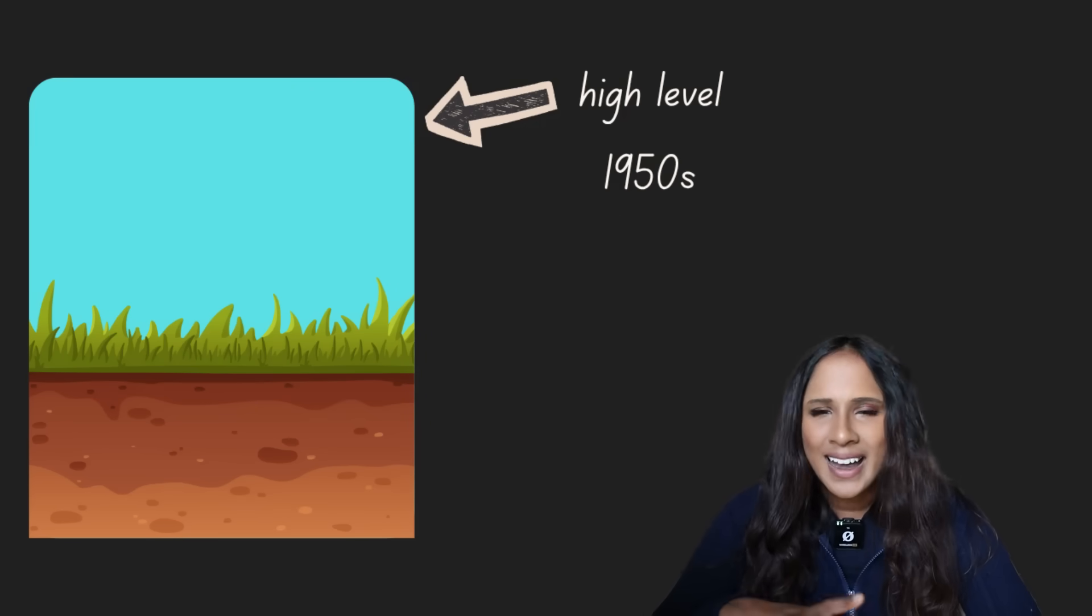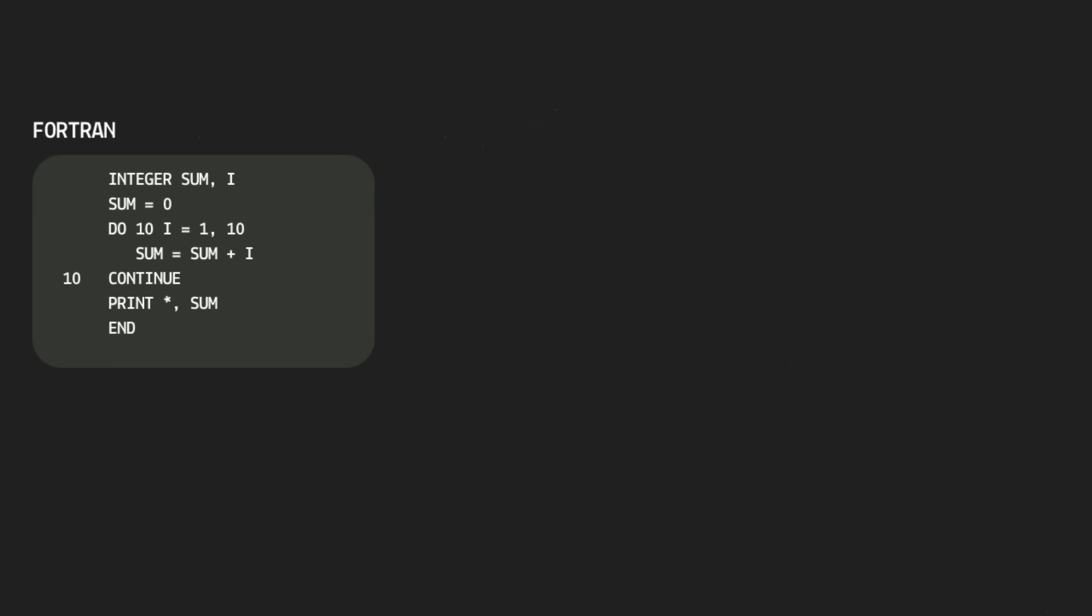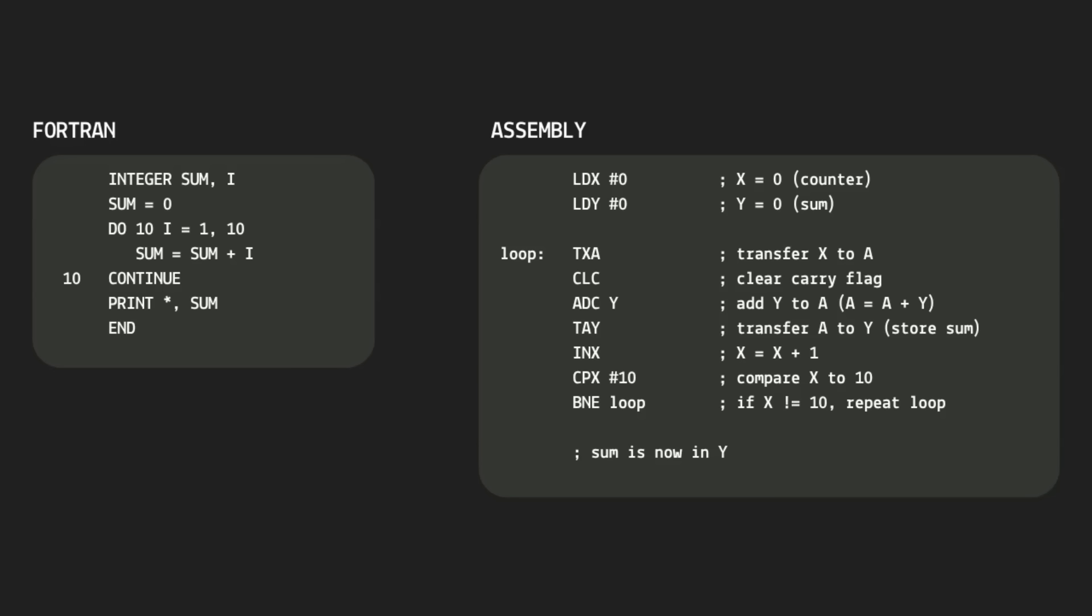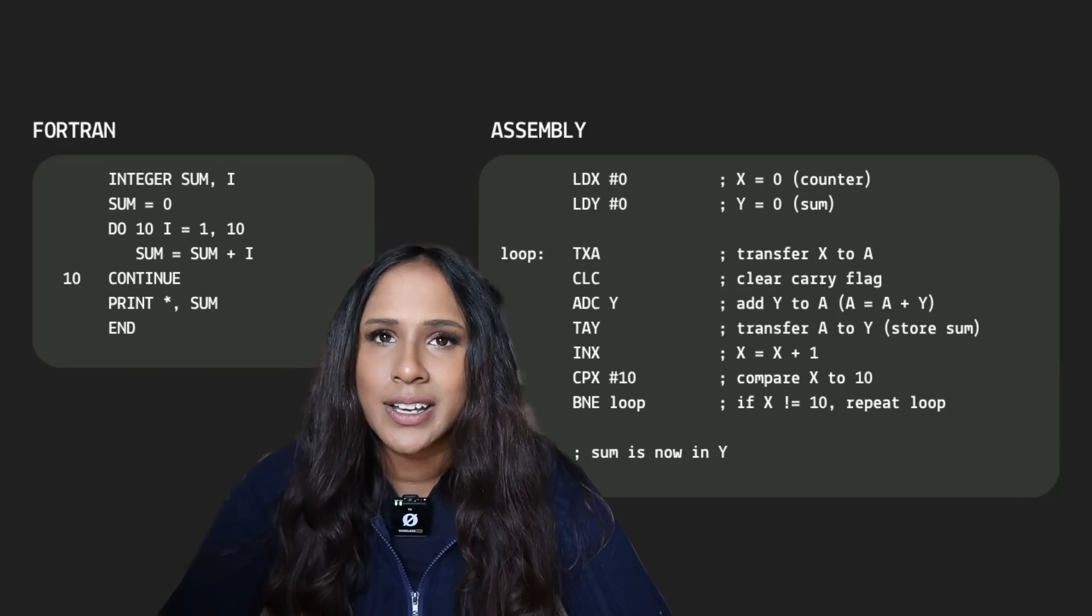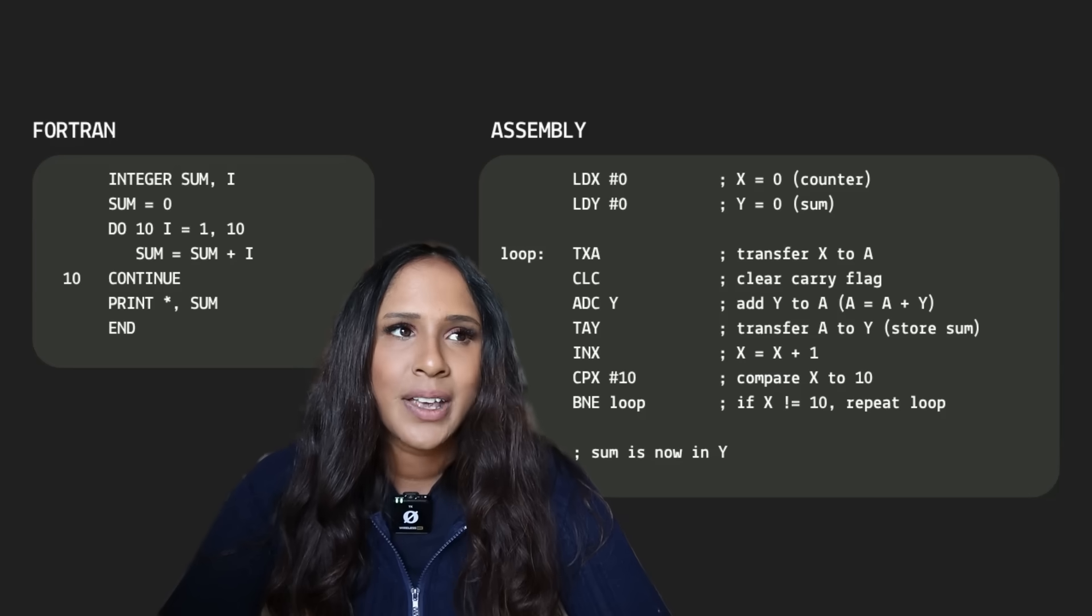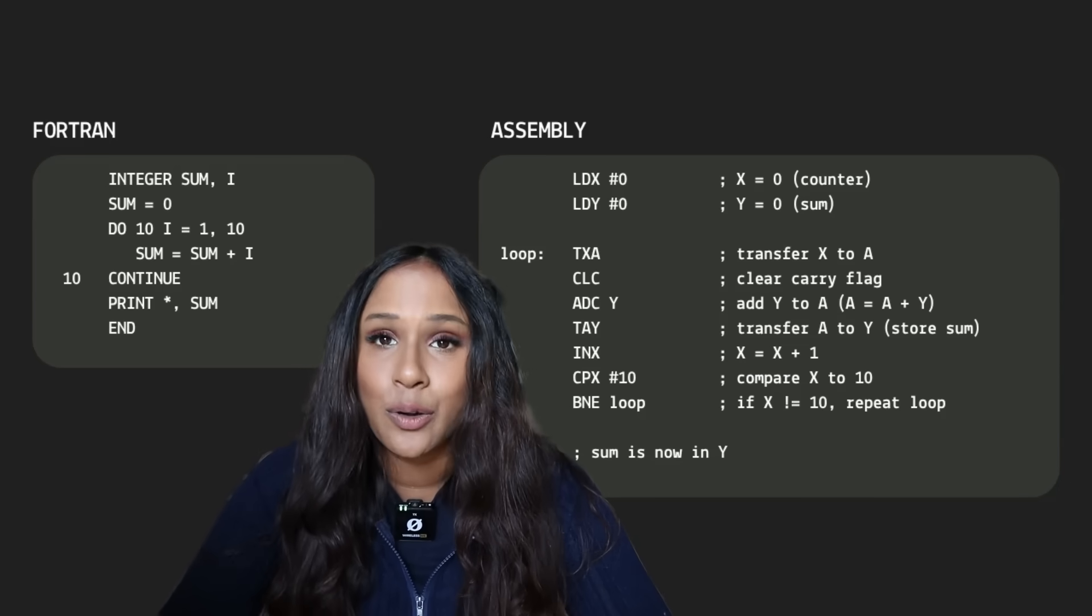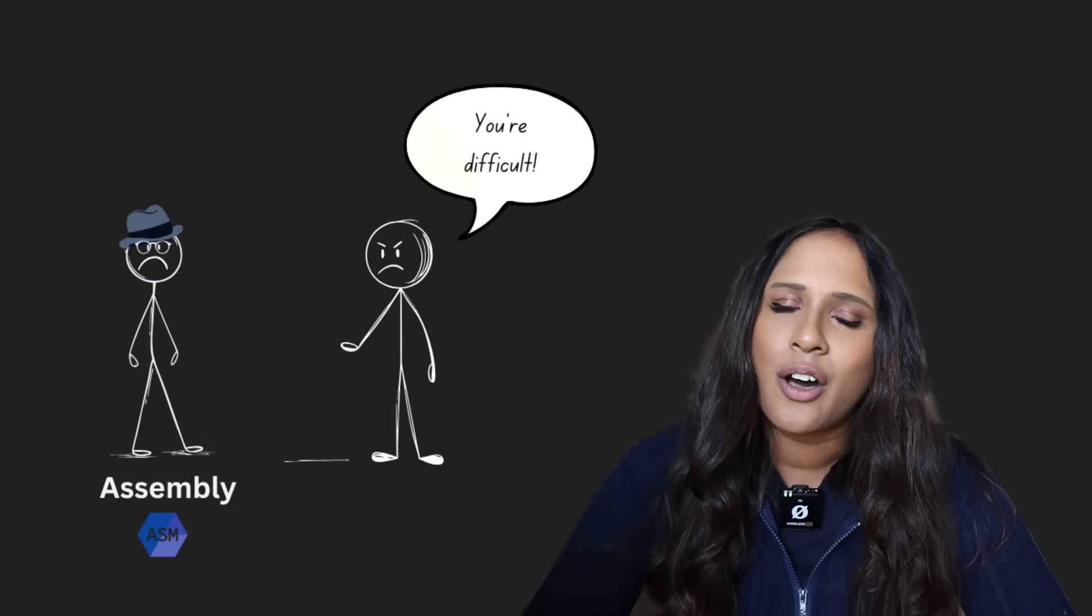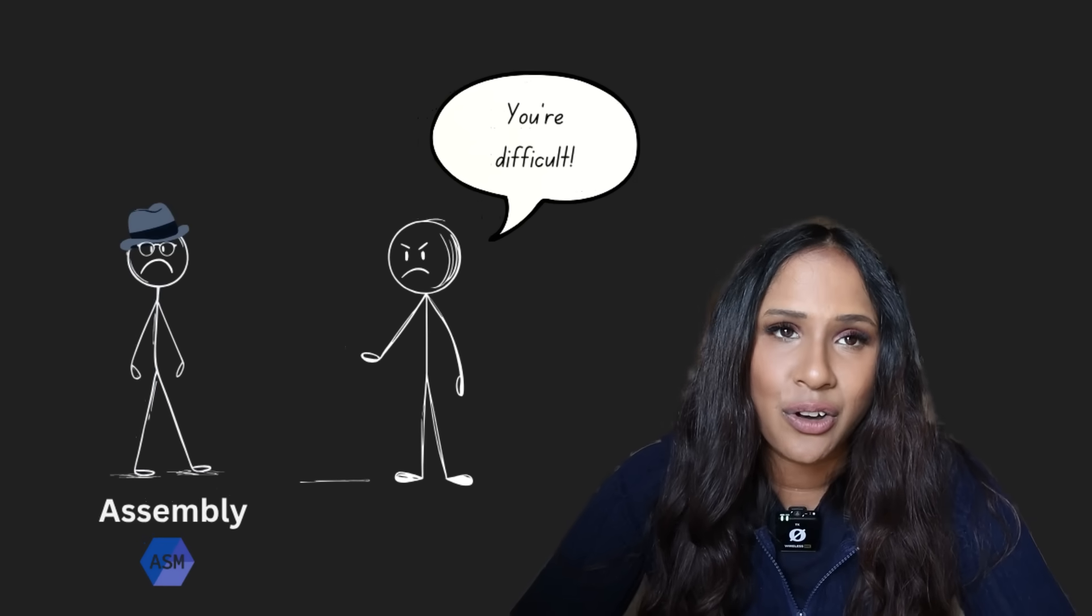But even during that time, high-level languages started popping up, like Fortran. This was around the 1950s. And these languages offered a more English-like syntax for programming. By the late 1950s, developers who are just a lazy bunch, they noticed that it was far more productive to write in these high-level languages, like COBOL or Fortran, and then have a compiler, essentially a translator, to translate it down to assembly or machine code. And that's when assembly started getting the reputation of it being difficult and low-level. As the 1960s, 1970s rolled on, that golden age of assembly just began to fade and people started favoring the higher-level languages more.